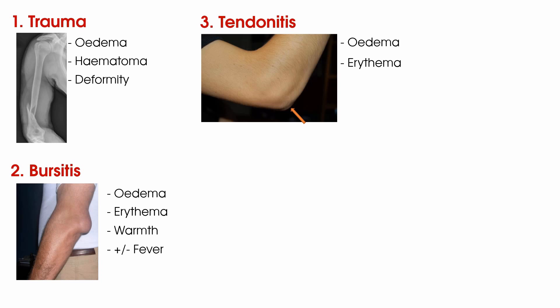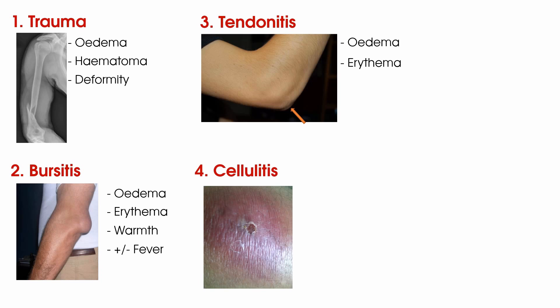Number four is an infection or cellulitis, where you may find redness, swelling, or in progressed cases even pus in the area of infection. Furthermore, look at your patient as a whole — do they feel unwell or do they have a temperature?